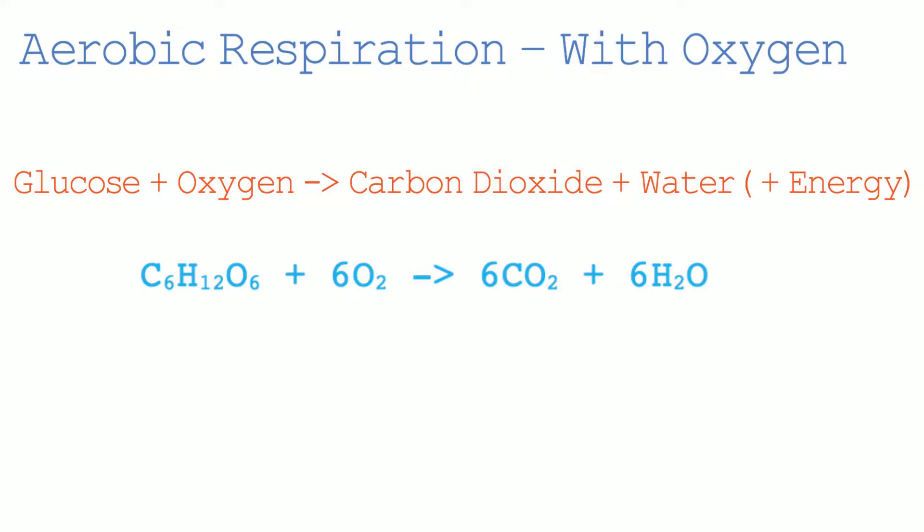The balanced symbol equation is C6H12O6, which is glucose, plus 6O2, which is oxygen. The glucose and oxygen react together to form 6CO2, which is carbon dioxide, plus 6H2O, which is water.